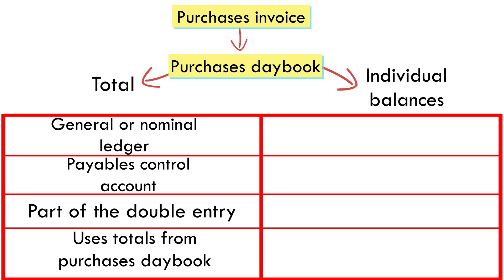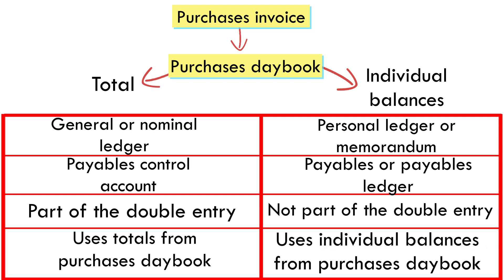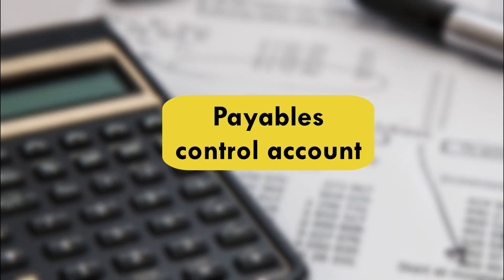Individual balances will be posted in the personal ledger or memorandum, called Payables Ledger or Purchases Ledger. This is not part of the double entry and it uses individual balances from the Purchases Day Book.